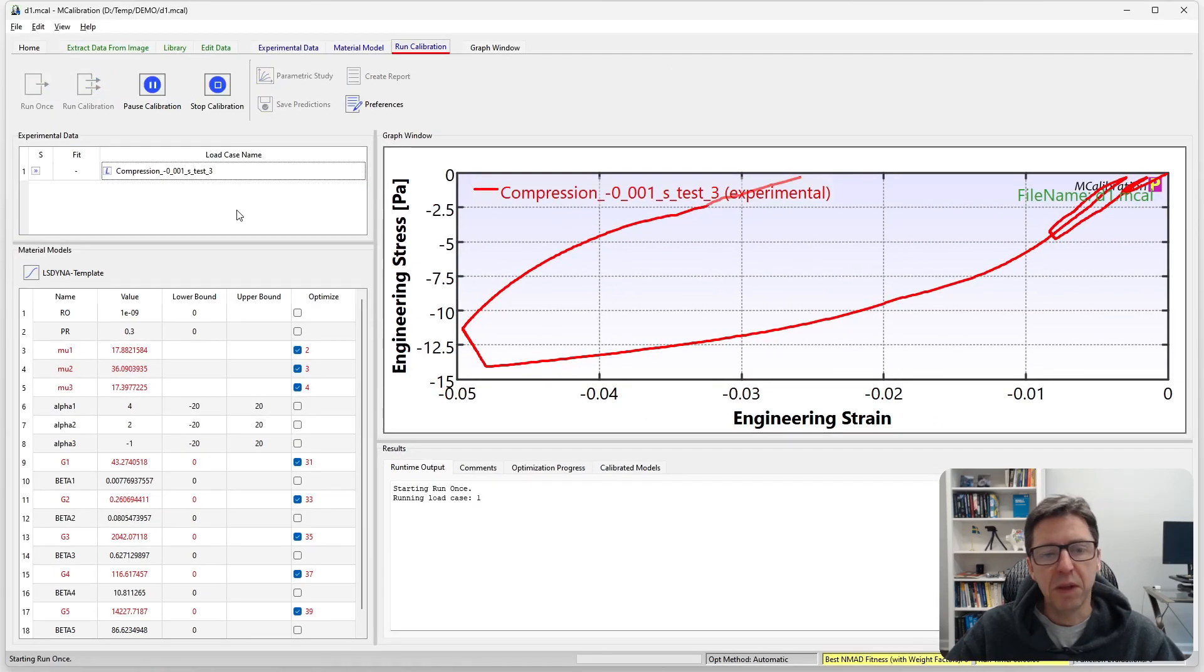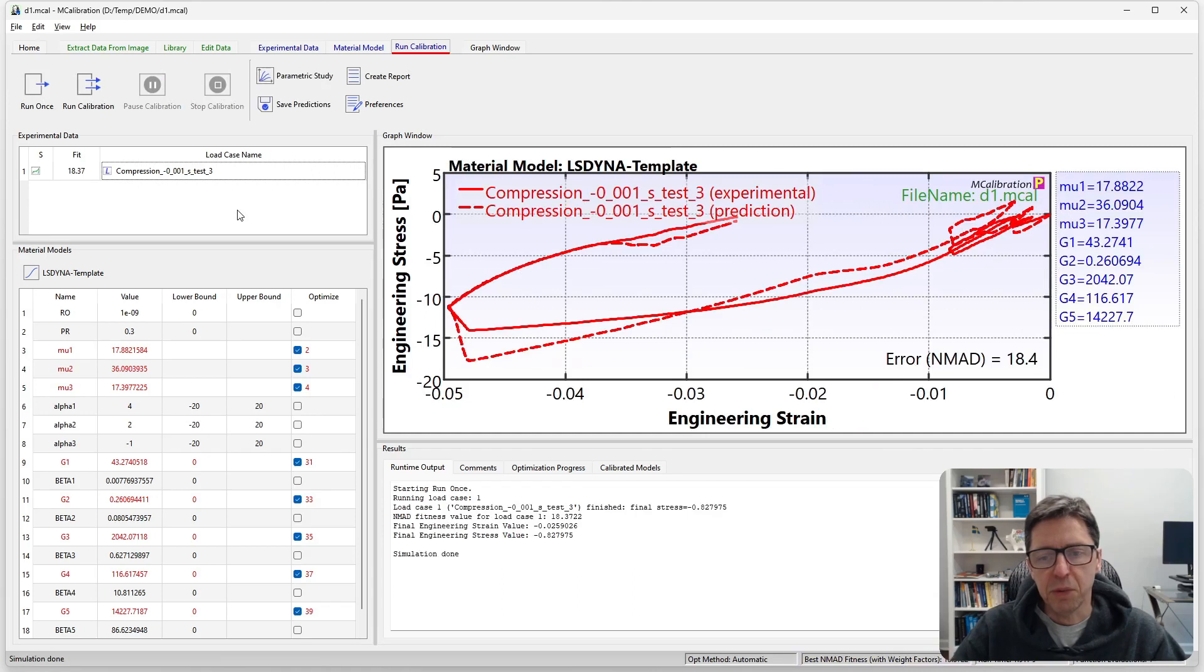Then you can just run this as any built-in material model. So here is the predictions after running this calibration just for a little bit. You see the parameters on the left here, but it happens that this captures the relaxation response relatively well as one would expect for a quick calibration of an Ogden linear viscoelastic material model.